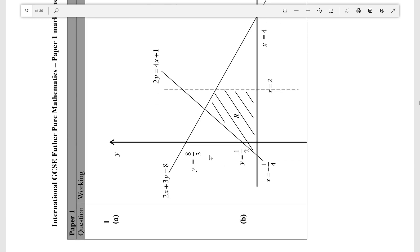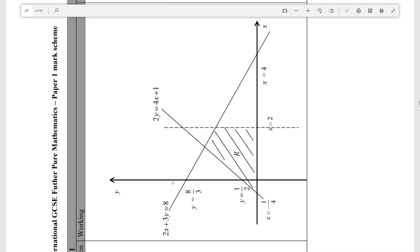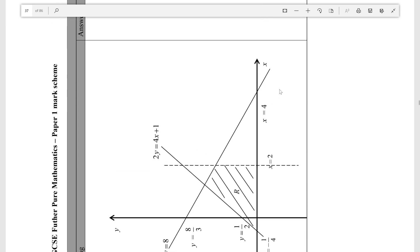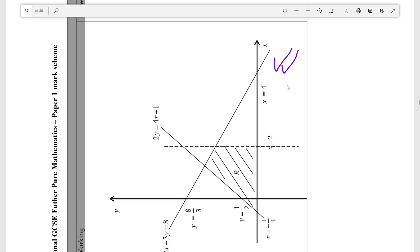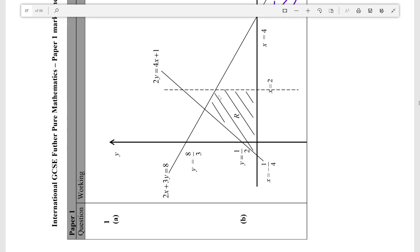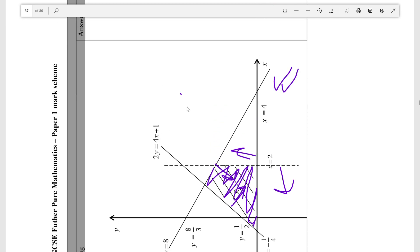Alright, so this is the marking for 1(a) and (b). As you can see we got our two lines pretty well, and then we have it on this side of this line, this side of this line, this side of this line, and this side of this line. So yep, all in here is what we decided R was, so that's another few ticks.